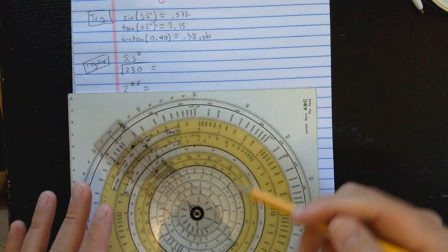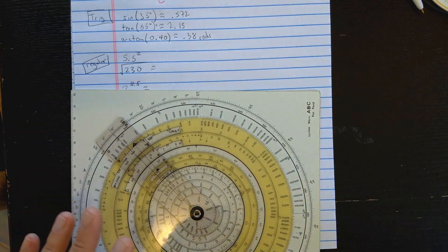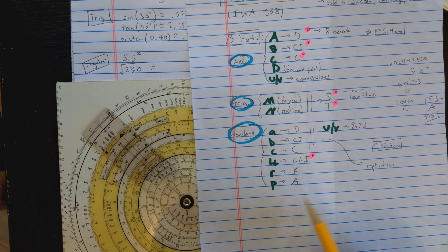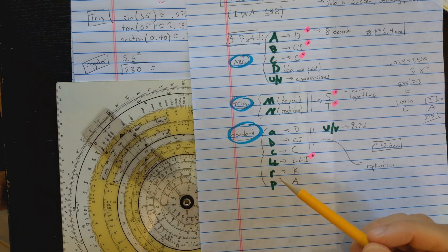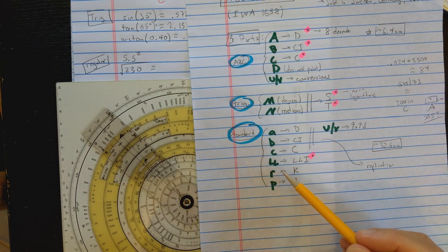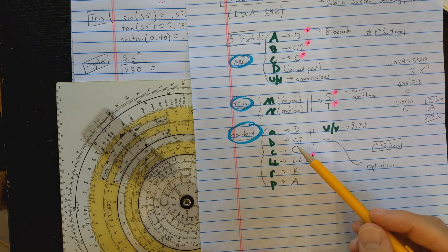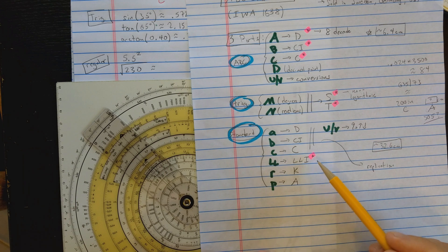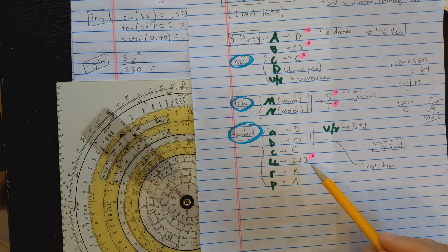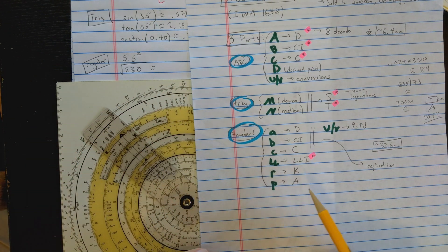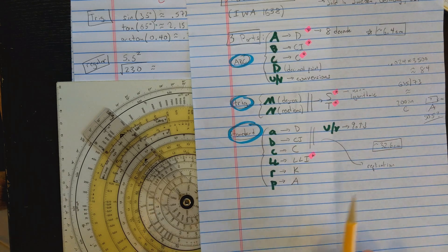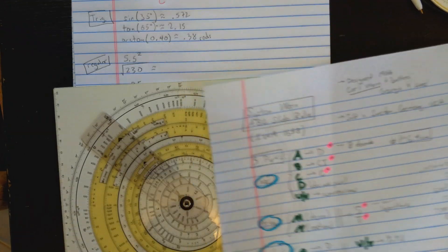Let's look at the regular slide rule part. These are mostly the inner scales, marked little a, b, c, l, r, and p. These scales are essentially d, c, CI, log — except the log scale spiral is reversed from what you might expect — K, and an A scale. I'll just do a couple of calculations; you can see my other slide rule videos for how to deal with those scales in general.